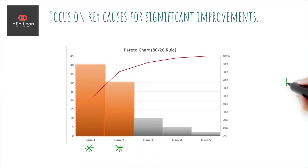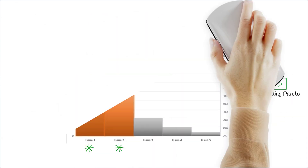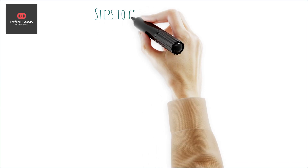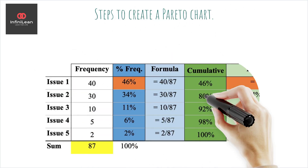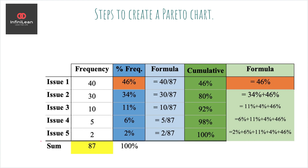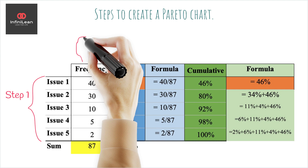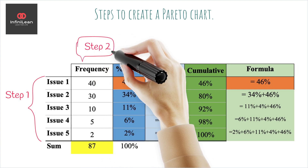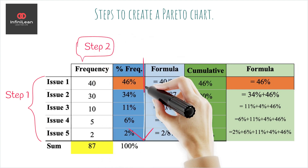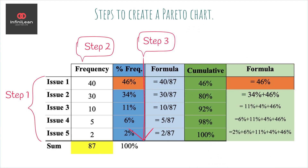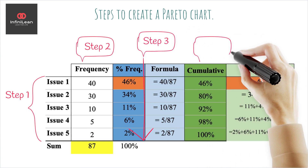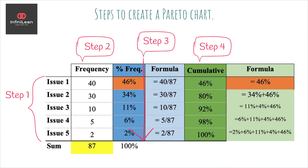Creating a Pareto chart involves a few simple steps. First, identify the problems or causes you want to analyze. Collect relevant data, categorize it, and quantify each category's frequency or impact. Next, arrange these categories in descending order based on their frequency or impact. Finally, calculate the cumulative percentage for each category.